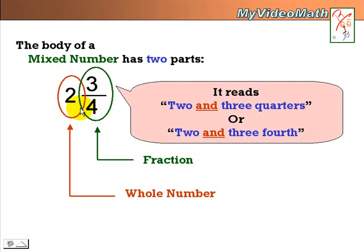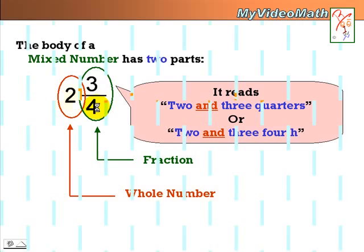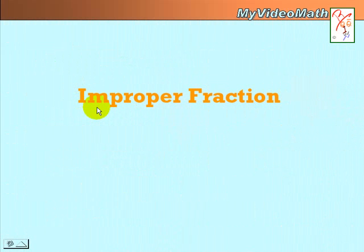This particular mixed number reads two and three quarters or two and three fourths. Now, what is an improper fraction?